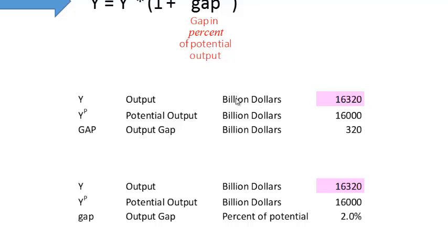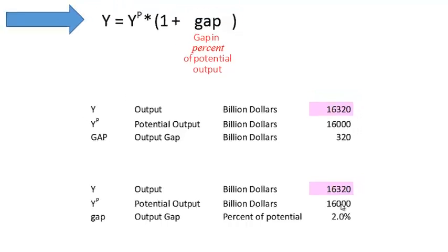For example, if our total output is $16,320 billion and our potential output is $16 trillion, our gap is $320 billion. Measuring the output gap as a percent of potential output, that comes to 2%.